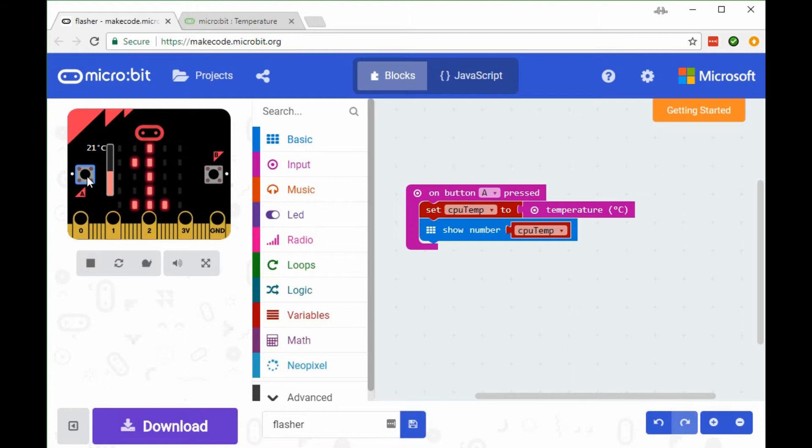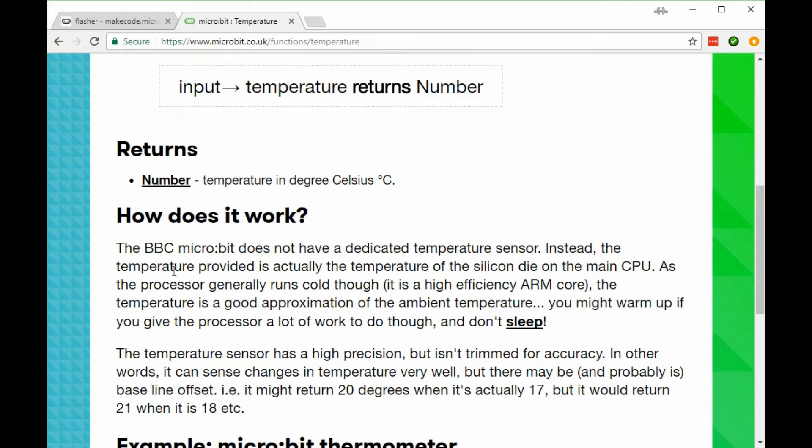Let's look at what this temperature actually represents. Looking at the documentation, it says here the BBC micro:bit does not have a dedicated temperature sensor. Instead, the temperature provided is actually the temperature of the silicon die on the main CPU. So basically there's an onboard temperature sensor in the chip and it's reading the temperature of the CPU. Obviously that may be different from the temperature in the room because sometimes CPUs when they're working hard they get hotter, so it'll be hotter than the surrounding temperature.